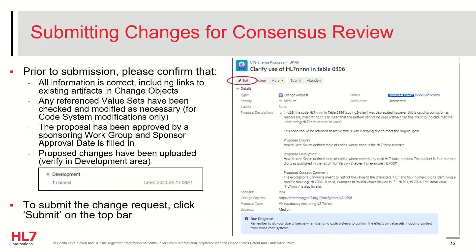You can click this link to examine the commit diffs to see the changes that you have submitted. Once you've ensured that everything is accurate and complete, click Submit at the top bar of the ticket. The ticket will then enter the Submitted state. At this point, no further changes are made to the proposal unless the submit processing uncovers technical errors in the proposal.